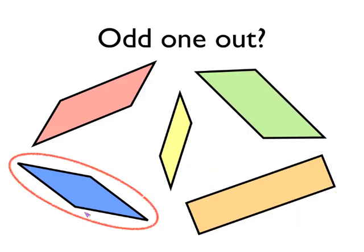Maybe you said this was the odd one out, because this rhombus here is the only shape where all four sides have the same length, and all the other quadrilaterals, all four sides are not the same length.